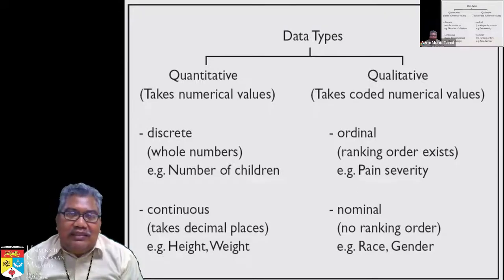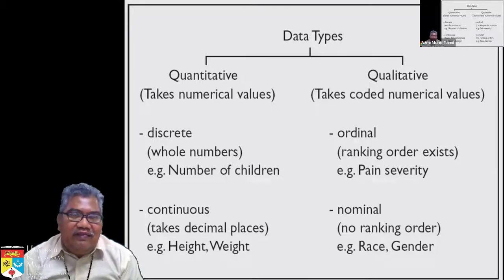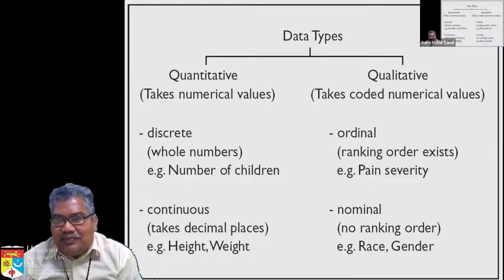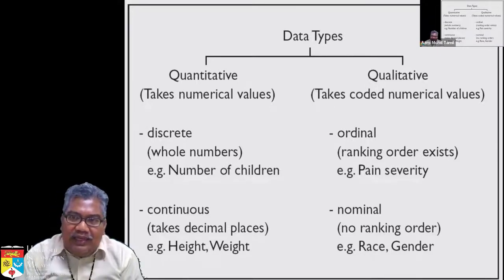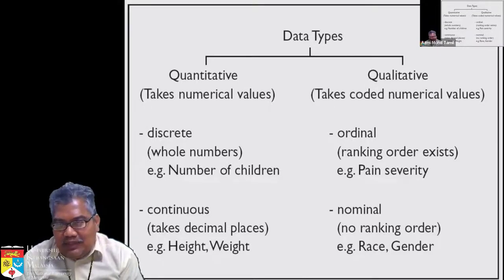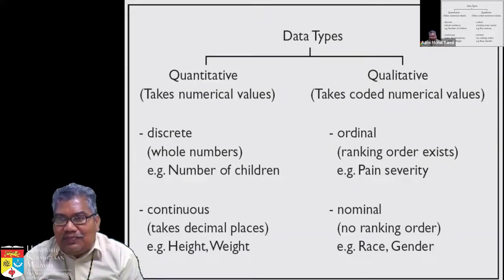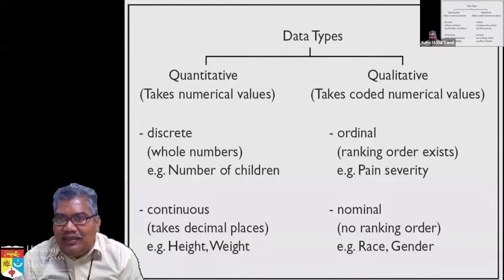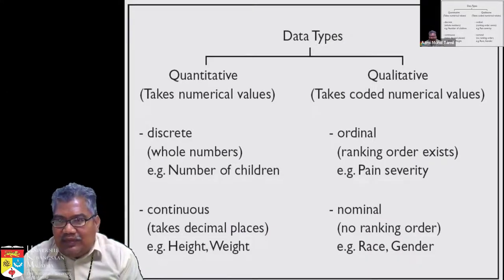Qualitative data is based on traits — for example, male and female. For us in Malaysia it is straightforward: male and female. For example, or ethnicity — we have Melayu, Cina, India, and so on.